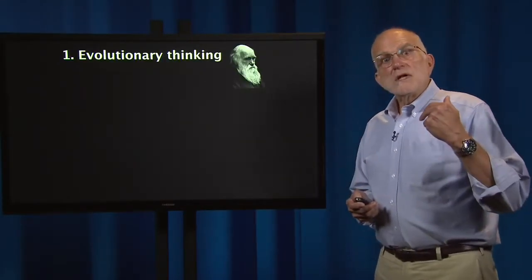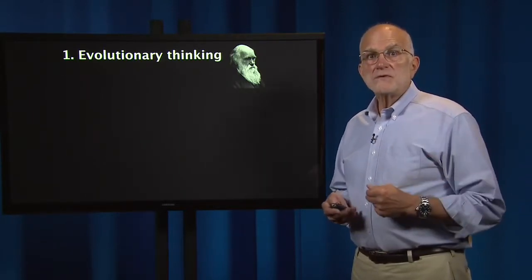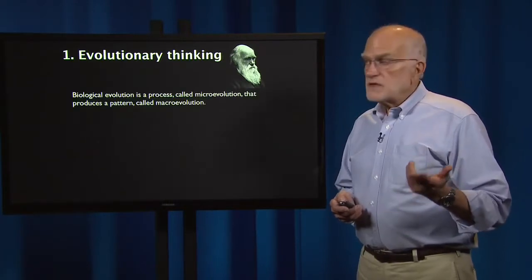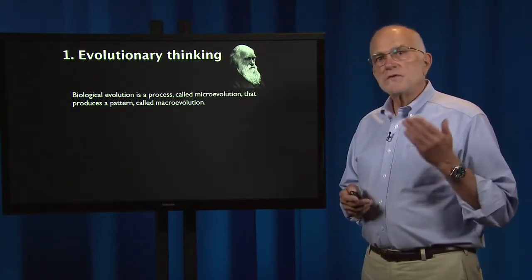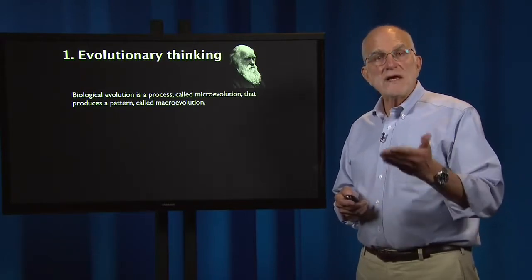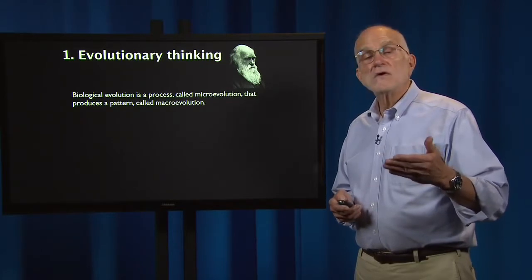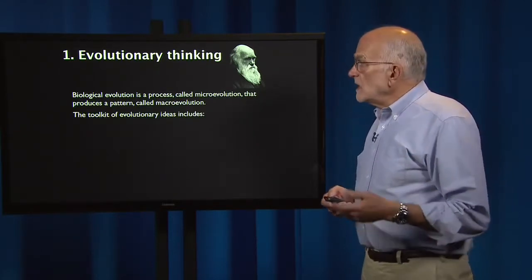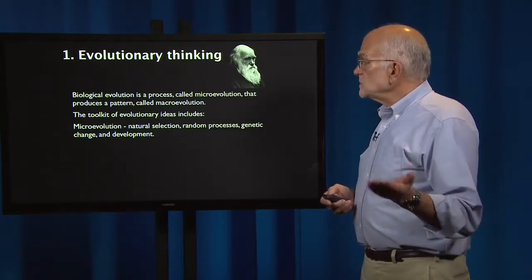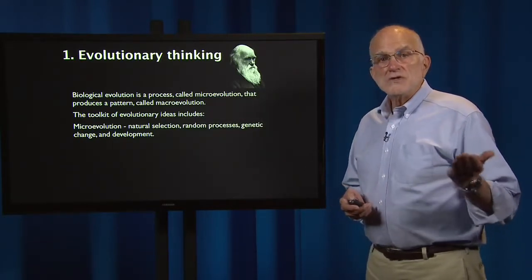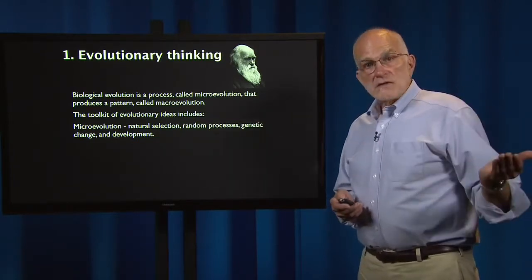In this introduction to the course, I just want to very quickly take you through the highlights of those chapters. In evolutionary thinking, we recognize that biological evolution is both a process called microevolution that produces a pattern called macroevolution, and both of these ways of thinking are relevant to medicine. The toolkit for microevolution includes natural selection, random processes, genetic drift, genetic change, and development.